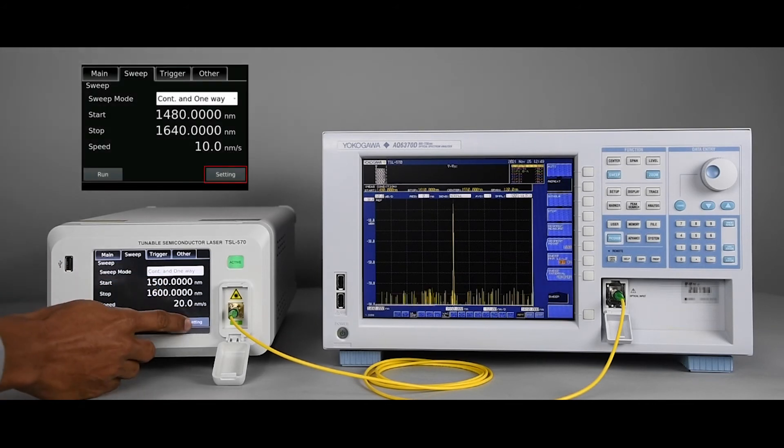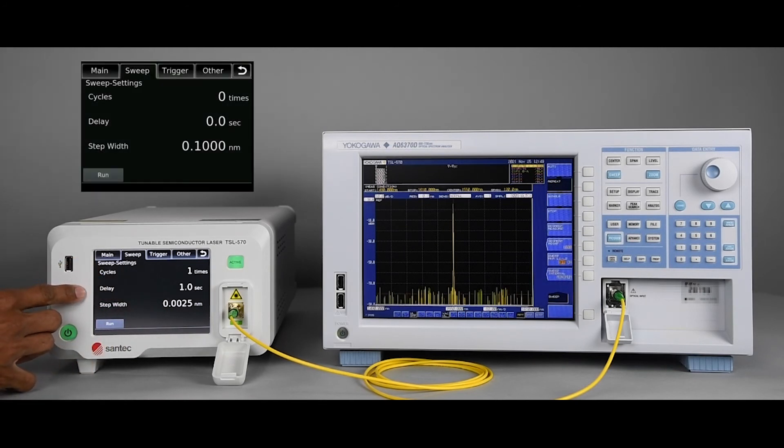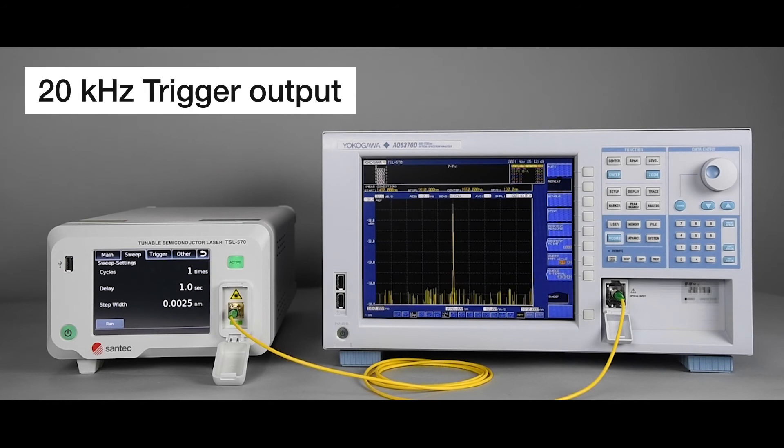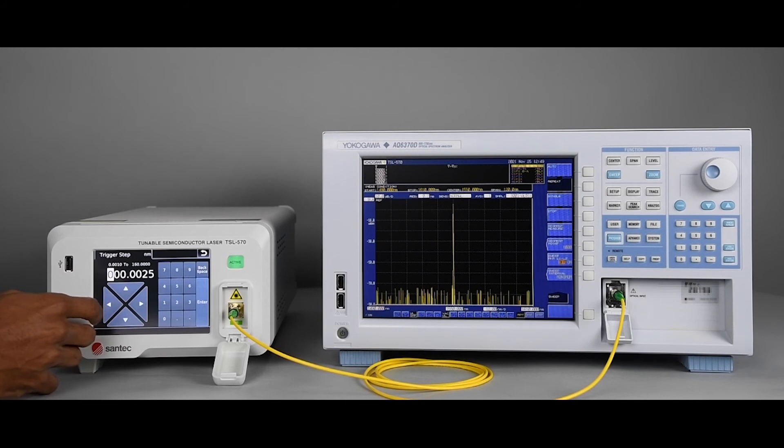Pressing on setting, we can configure the number of times we want to run the sweep, the delay between each sweep, and the interval of the trigger signal output. Thanks to the TSL 570's 20 kHz output trigger, the step width can be set as small as one-twenty-thousandth of the sweep speed. In this example, we can set this step to one picometer.